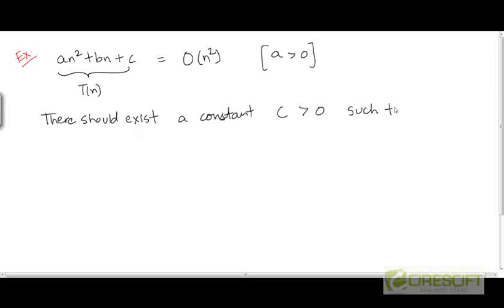There should exist a constant c greater than 0, such that for large n, or values of n that are large enough beyond some threshold, T needs to be bounded from above by a constant multiple of n².